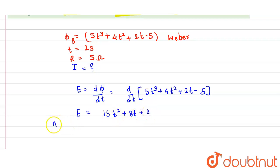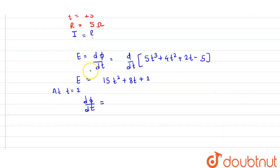Now at t is equal to 2, so what do we have? E is equal to dφ/dt. So dφ/dt is equal to, if we put the value of t, we have 15 into 2² is 4, plus 8 into 2, plus 2.